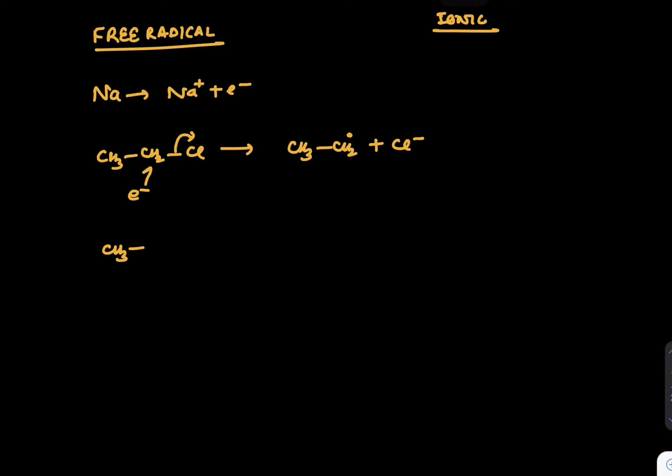Now CH3CH2 radical which has been formed has option number one: it can dimerize. So if it dimerizes it will form CH3CH2CH2CH3, which is C4H10.